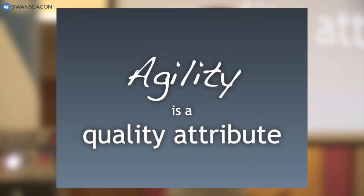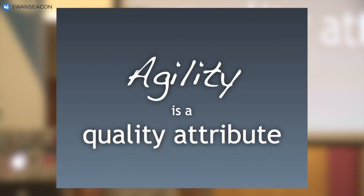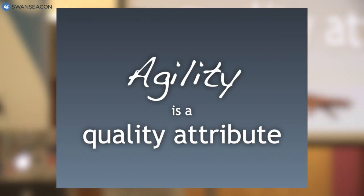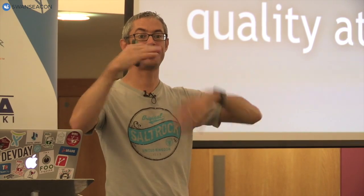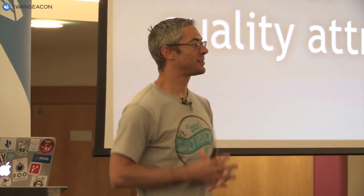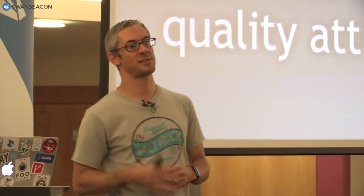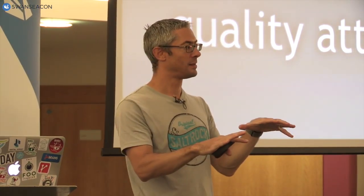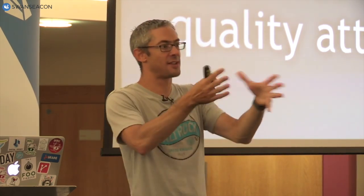I also think agility is a non-functional requirement — a quality attribute. Different teams building different types of software need differing levels of agility. Some teams need to move really, really fast and others not so much. And maybe it's this agility question — how fast do you want to move — that should guide your starting point for the architecture. Are you going for something monolithic or microservice-based or something in between? The level of agility you need drives some of the key architecture decisions you're making.